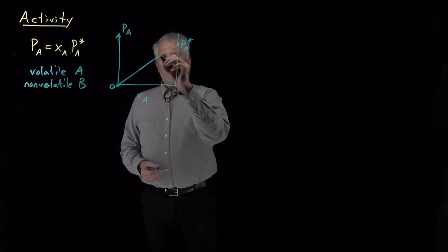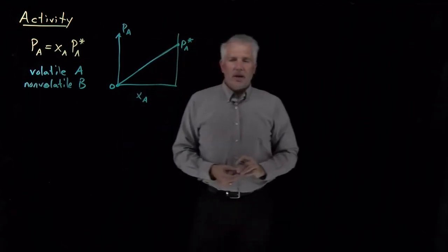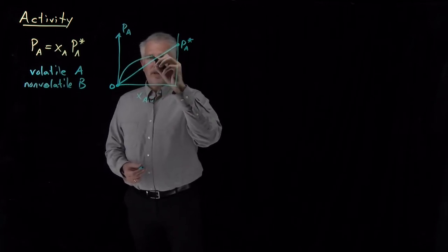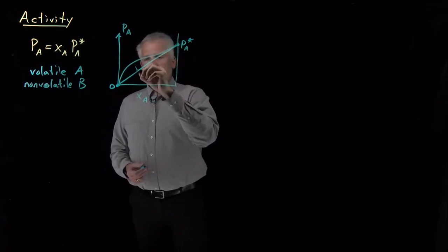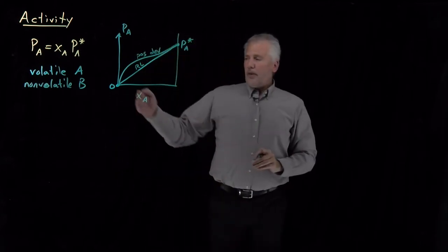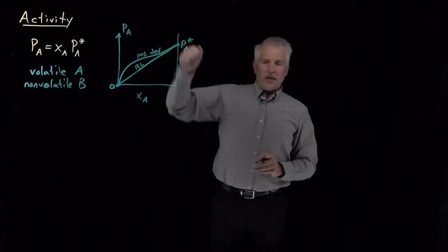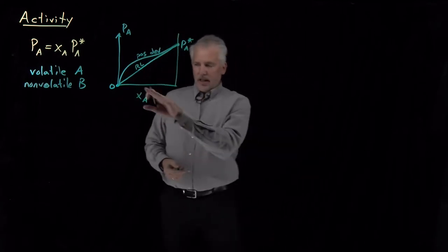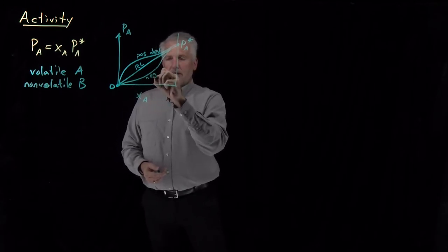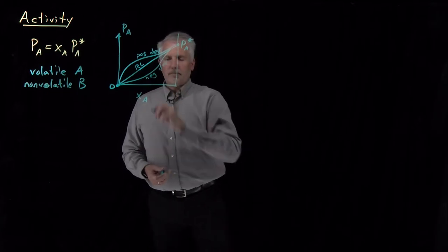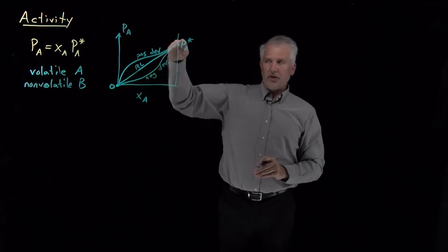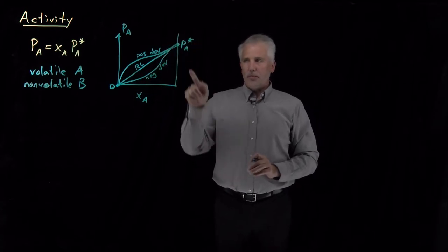Non-ideal solutions can have either positive or negative deviations from Raoult's Law. A system with positive deviations will have a vapor pressure that goes up too rapidly at first and then comes back in line with Raoult's Law at high concentrations. A system with negative deviations will have a pressure lower than predicted by Raoult's Law at first, and then eventually come back in line as we approach the pure solvent.